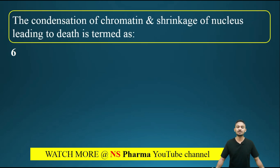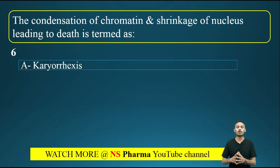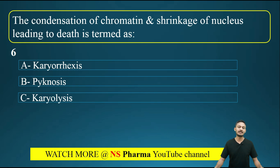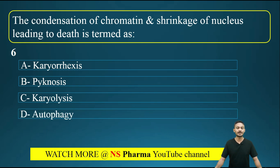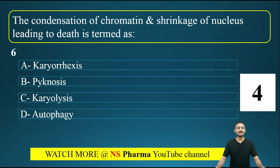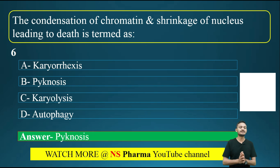Question number 6: the condensation of chromatin and shrinkage of nucleus leading to death is termed as? Options are: option A, karyorrhexis; option B, pyknosis; option C, karyolysis; option D, autophagy. The correct answer is option B, that is pyknosis. Pyknosis is also called karyopyknosis.